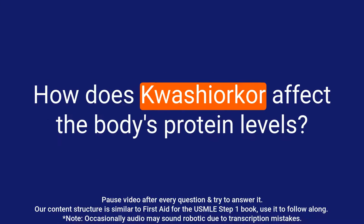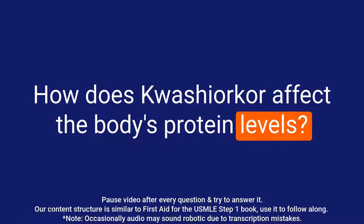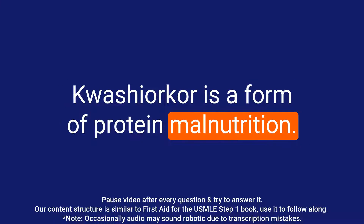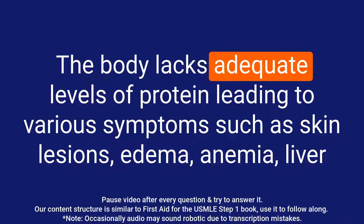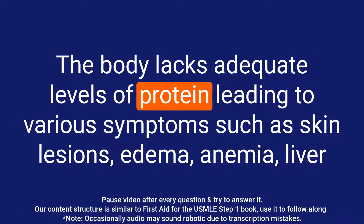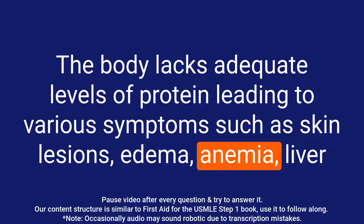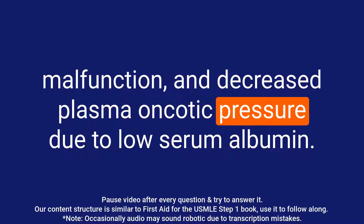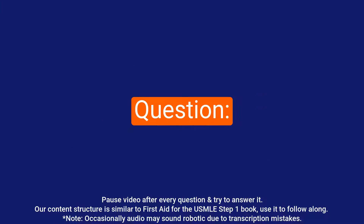Question: How does kwashiorkor affect the body's protein levels? Answer: Kwashiorkor is a form of protein malnutrition. The body lacks adequate levels of protein, leading to various symptoms such as skin lesions, edema, anemia, liver malfunction, and decreased plasma oncotic pressure due to low serum albumin.